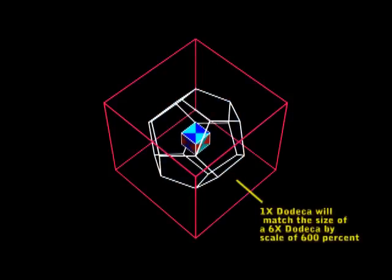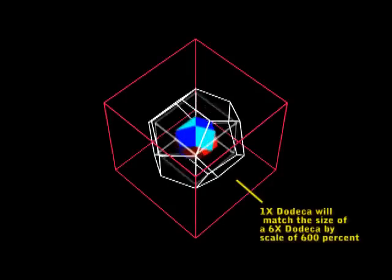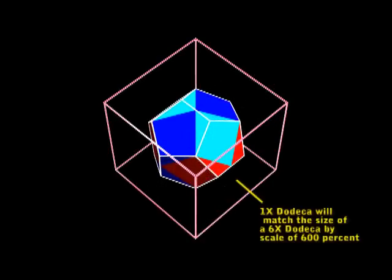I showed that everything initialized from the Plato cube or the Bucky cube. Now look how this Plato cube will turn into a dodeca, and when I scale it up 600, it matches the larger dodeca.